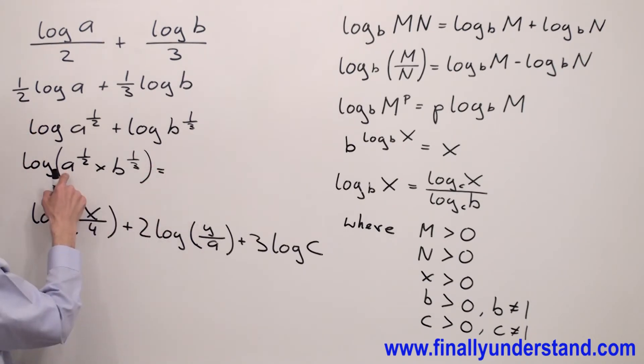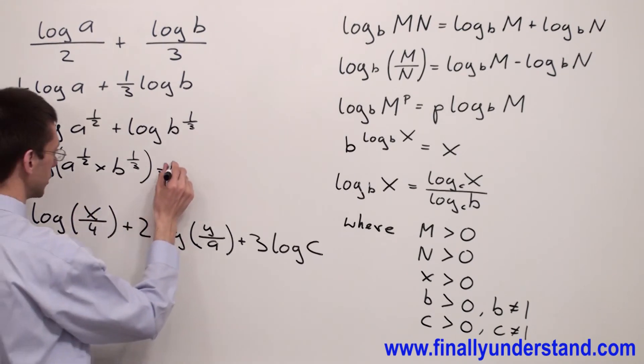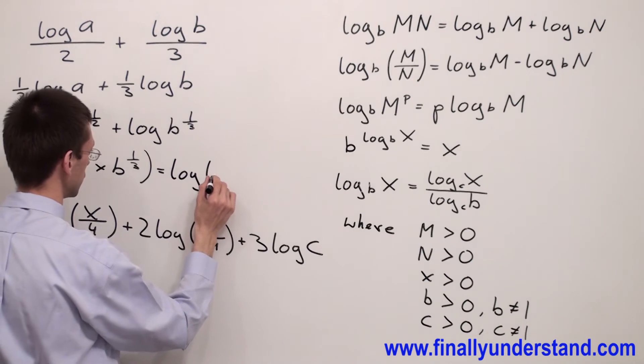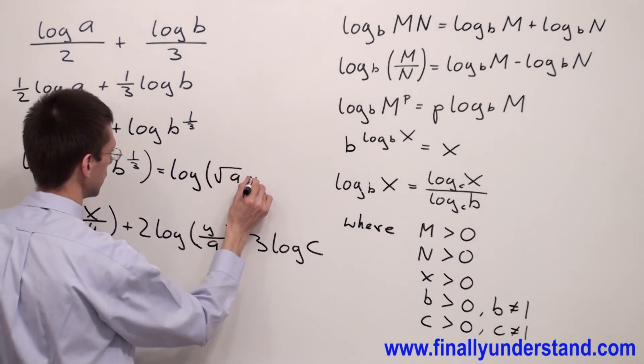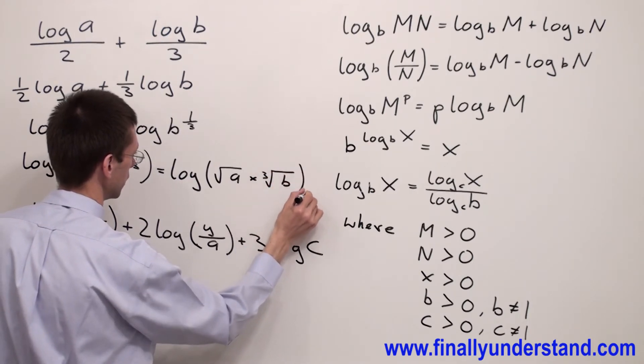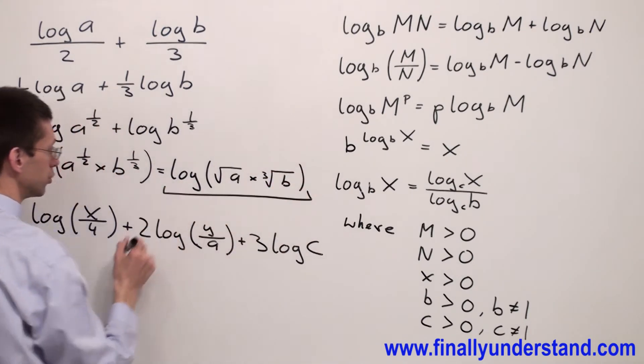Equals, you have to keep in mind that a to power 1 half is the square root of a and b to power 1 third is cube root of b. I can rewrite this as log in parenthesis square root of a times cube root of b. This is the solution to my problem.